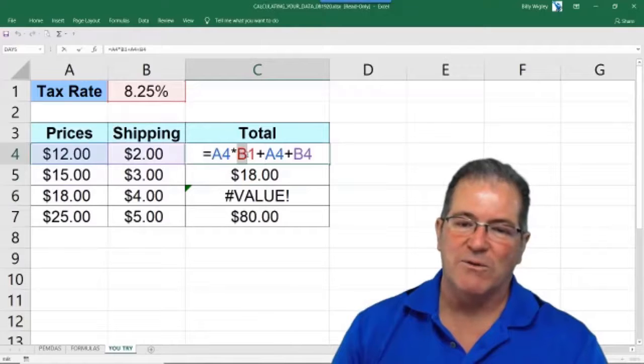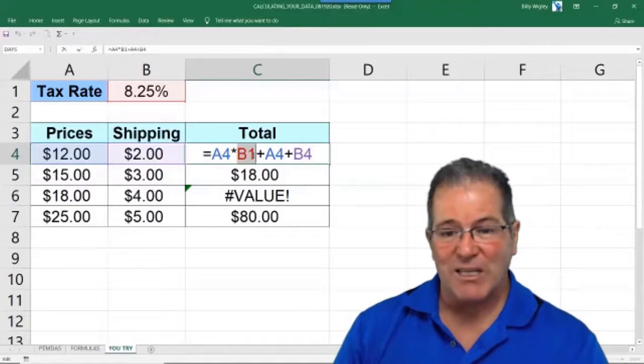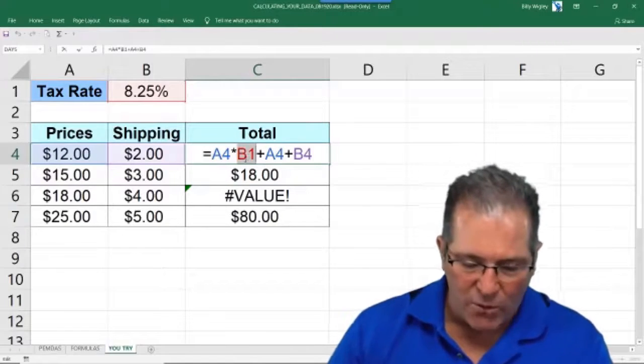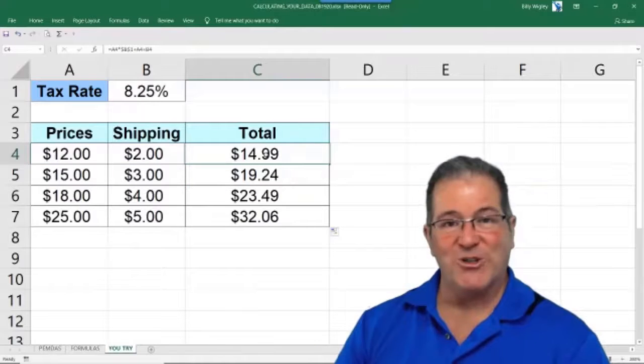So, we can just go right back in to highlight the cell that we needed to anchor. And then just press F4. Boom. Looks like we're good to go.